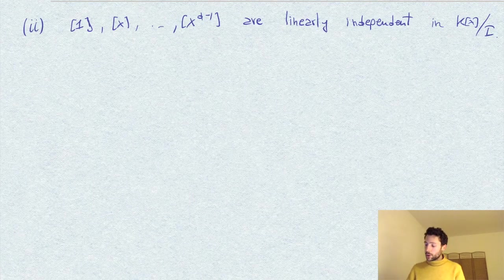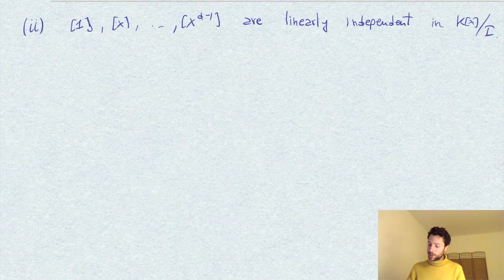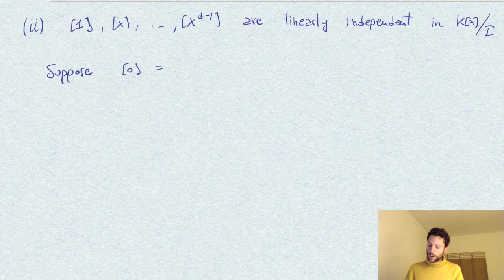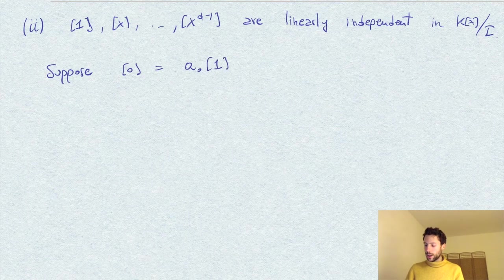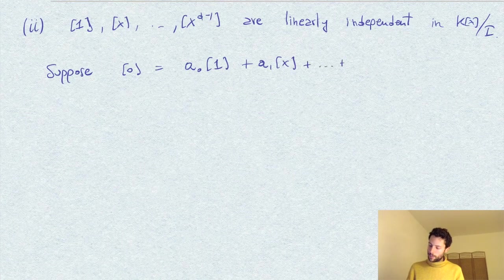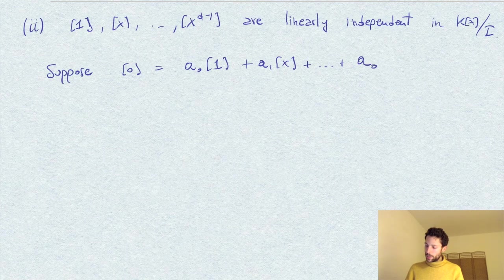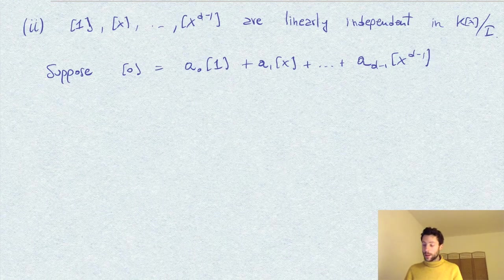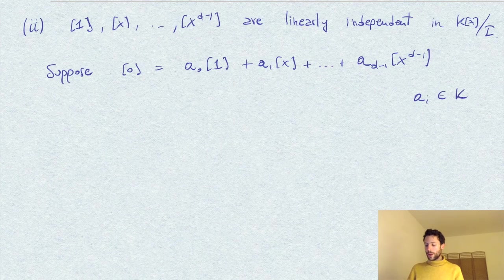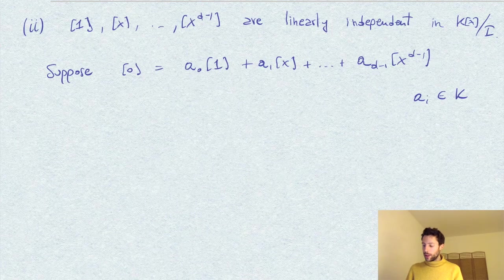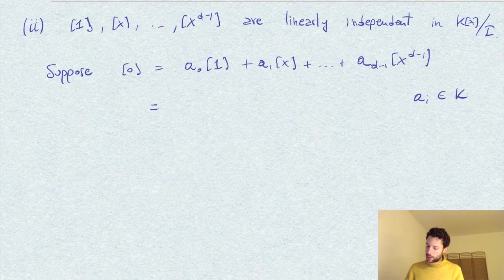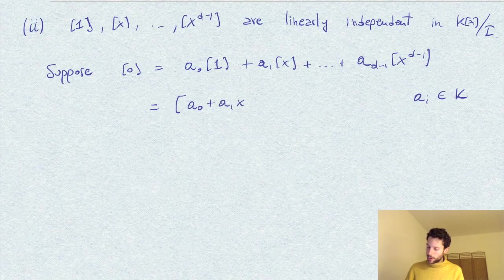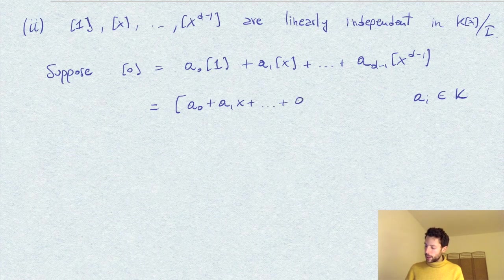What do we do? We assume that there is a linear combination which equals 0. So we suppose that the class of 0 equals a_0 times the class of 1 plus a_1[x] plus ... plus a_(d-1)[x^(d-1)], where these are elements in the field. This can be rewritten as the class of the polynomial a_0 + a_1x + ... + a_(d-1)x^(d-1).